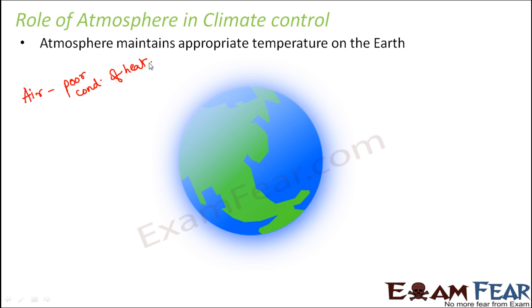Similarly, at night, because air is a poor conductor of heat, it doesn't allow too much heat to escape out of the earth. If too much heat escaped, the temperature of the earth would drop drastically. Whether the temperature is very low or very high, living organisms would not be able to survive. So air neither allows excess heat to enter inside the earth, nor does it allow excess heat to escape out.